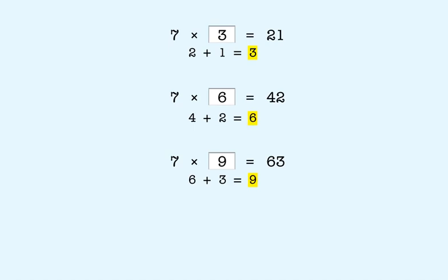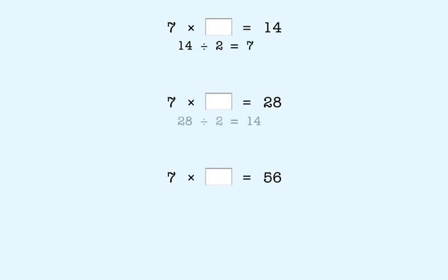This does not work for any other missing factors with 7. So let's look at them next. Here are three other facts. What's important in these facts is that the product in each one is an even number. An even number is one that you can divide by 2. So let's divide each product by 2. 14 divided by 2 is 7. 28 divided by 2 is 14. 56 divided by 2 is 28.